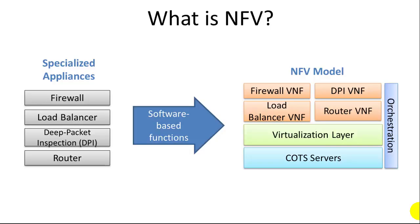The basic structure here: traditionally you had specialized appliances for firewalls, load balancers, deep packet inspection, routers — all these things were basically 1U or 2U appliances with specialized hardware designed by the manufacturer. In the case of a firewall, maybe Barracuda makes a specialized firewall, or load balancers from F5 that have specialized rack-mountable appliances with their own hardware and their own embedded software running on that hardware.